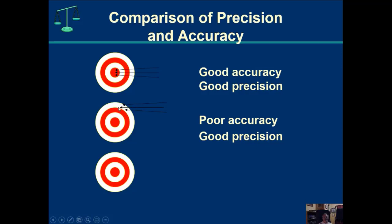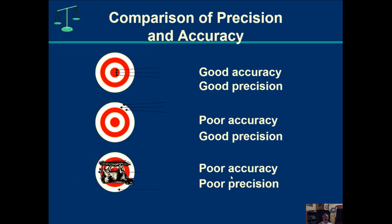Very often when you have poor accuracy but good precision, you need to calibrate the instrument you're using. And if you wind up with just a spattering of different measurements — poor accuracy and poor precision — you need to start over: examine your procedures, calibrate your measurement device, and redo the whole thing.